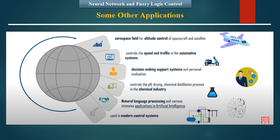Let us see some other applications of neural network and fuzzy logic control: in the aerospace field for altitude control of spacecraft and satellites; controlling speed and traffic in automotive systems; decision making support systems and personal evaluation; controlling pH, drying, and chemical distillation processes in the chemical industry; and natural language processing and various AI-intensive applications in modern control systems. This shows that neural network and fuzzy logic control have applications in almost all branches, and as AI and ML have wide applications irrespective of branch, this is a very useful concept for all students.